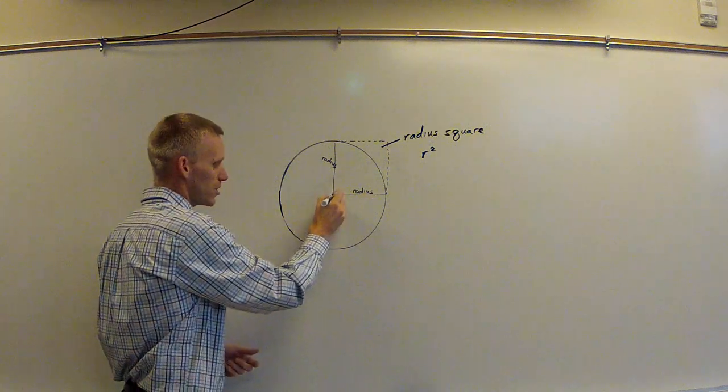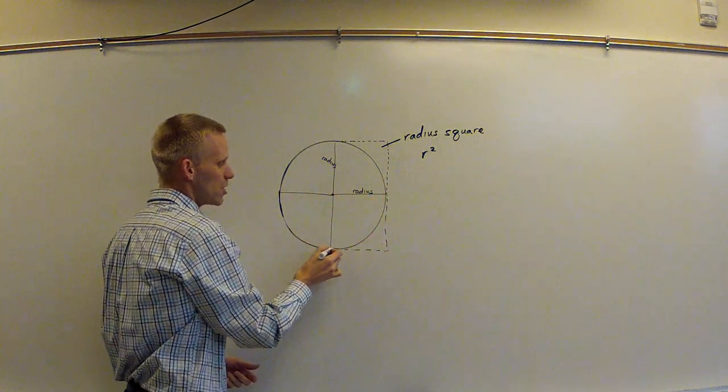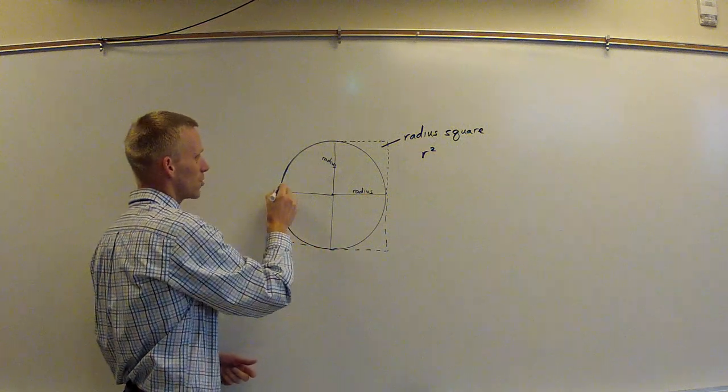Well, without too much imagination, we can see that it would be four, one in each quadrant of the circle.